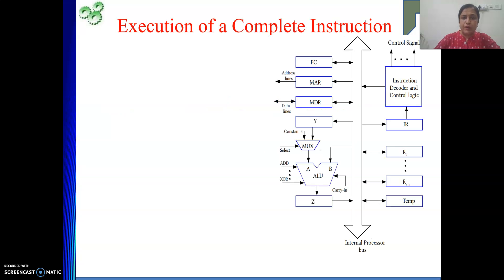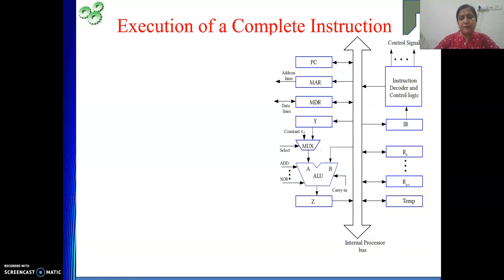To do this, we are going to use our single bus CPU organization. This diagram is already clear to us. One more thing I forgot to mention in previous videos: these registers, this ALU, and this set of interconnections together are termed as the data path. Now we will see one complete instruction execution.